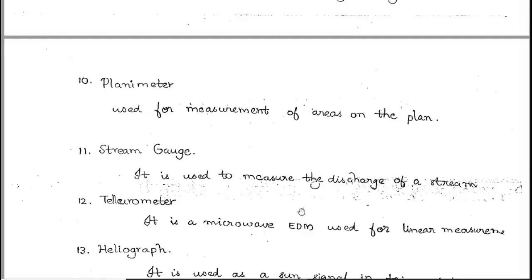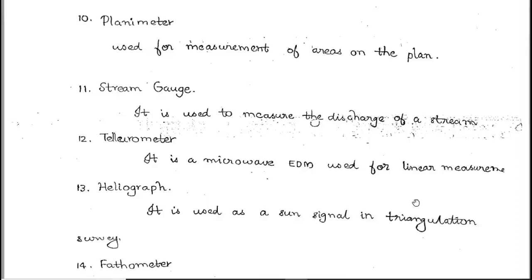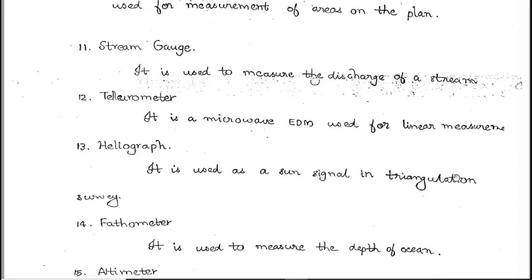The stream gauge is used to measure the discharge of a stream. The tellurometer is a microwave EDM used for linear measurement. The heliograph is used as a sun signal in triangulation survey.